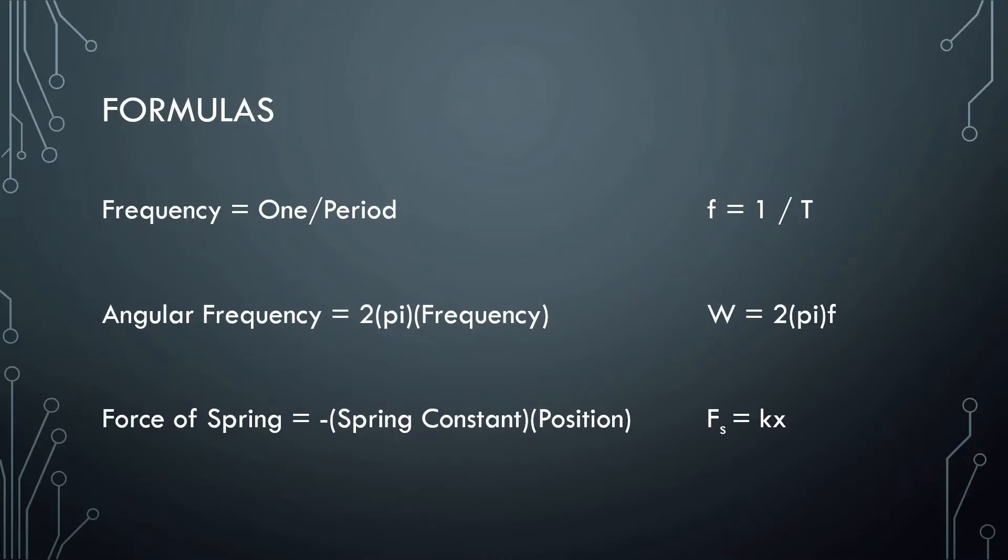So, some formulas. Frequency is equal to one over the period, or the inverse of the period. The angular frequency is equal to two pi times frequency, or what I like to use, the angular frequency is equal to two pi over the period. So personally I like this formula a little better. And the force of the spring is equal to kx.